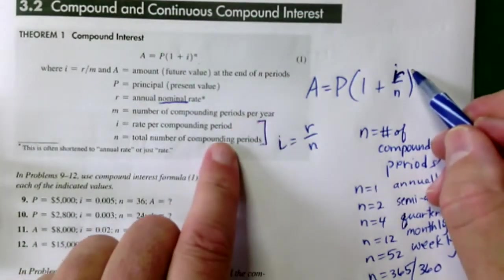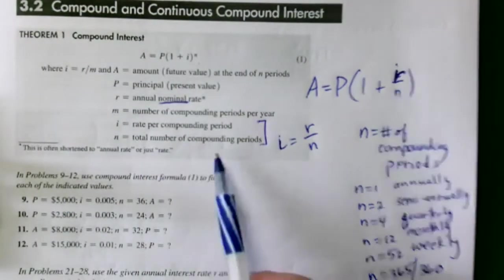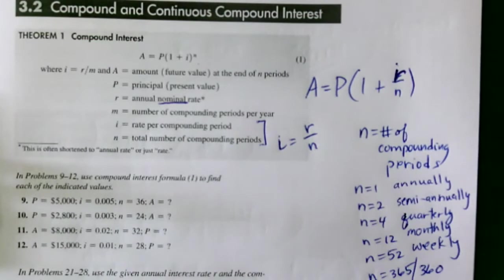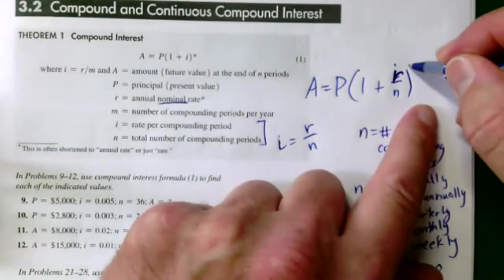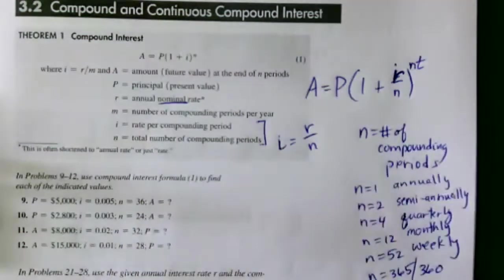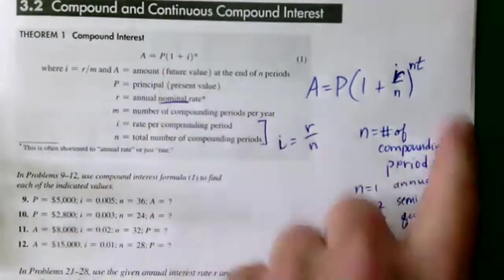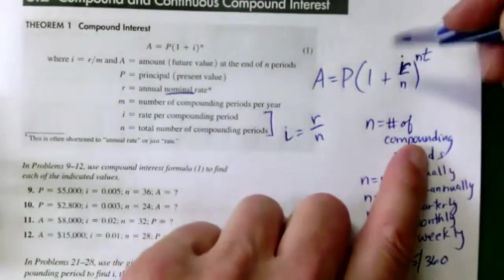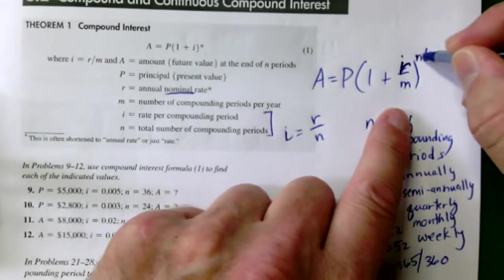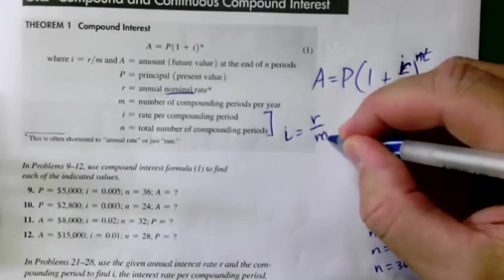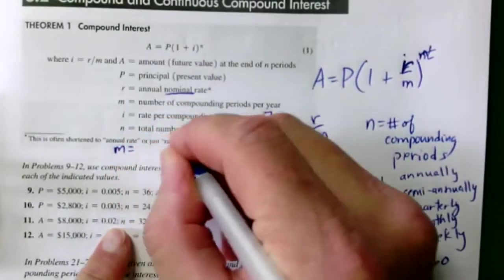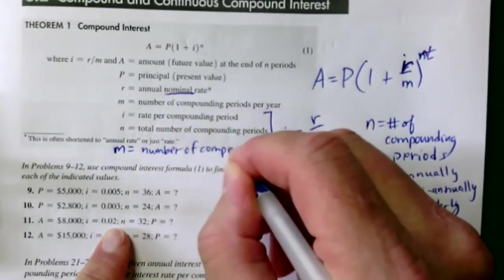The exponent in the formula is N, the total number of compounding periods. So if you have three years compounded monthly — 12 periods per year — the total compounding periods is 36. What we usually write in the exponent is M times T: take the number of years, multiply by the compounding periods per year. I'll redefine the variable as M to represent the number of compounding periods in one year.